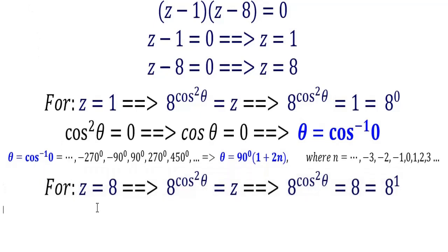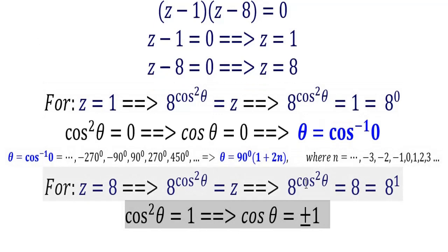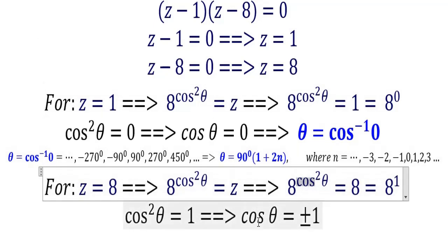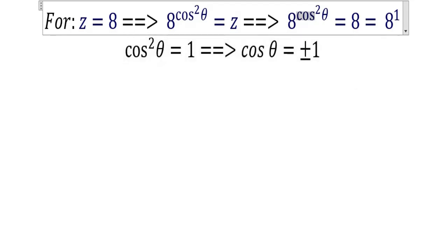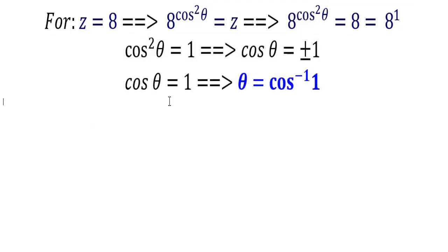For z equals 8: 8 to the power of cosine squared theta equals 8, and 8 is 8 to the power of 1. That means cosine squared theta equals 1. Taking the square root of both sides, cosine theta equals plus or minus 1. So when cosine theta equals 1, theta is cosine inverse of 1. This is the second solution.